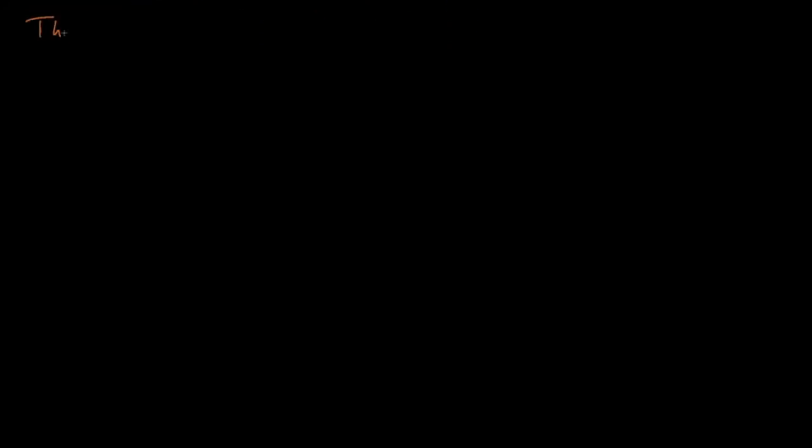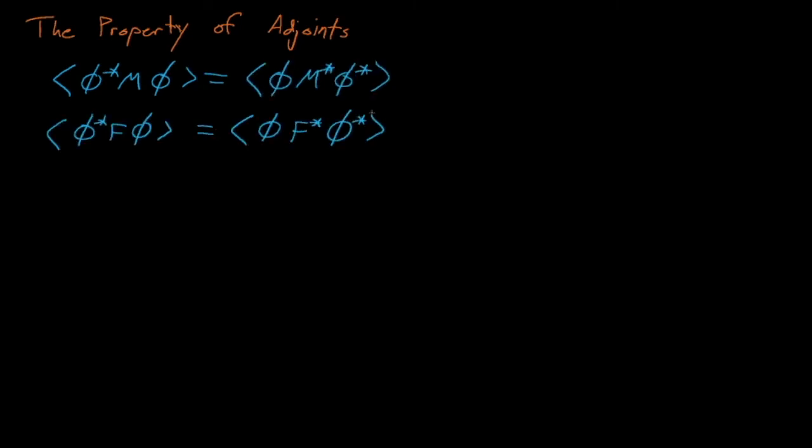So according to the property of adjoints, if we take the inner product of this quantity, we can switch the order of φ and φ* in these inner products by taking the adjoint of our M or F operators. You'll see why this is important pretty soon, but I guess for a spoiler, this property is required to derive the first order perturbation equation, which you'll do in a couple lectures from now. This first order perturbation equation is important because it predicts how the reactor's power will change in response to some perturbation in the system or some reactivity insertion. So the property of adjoints is really, really important.